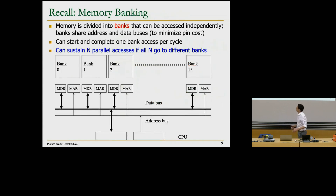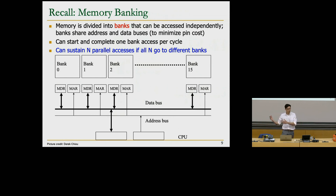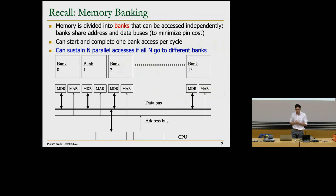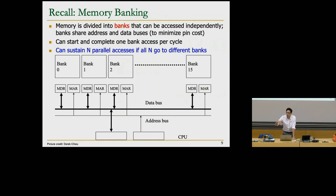We also discussed memory banking. To feed multiple processing elements efficiently, we need efficient memory access — that's why we use multi-banked memory. We can access all banks simultaneously, issuing one request per bank per cycle. One problem is that we cannot perform two accesses to the same bank at once. A solution is having more than one port per bank, meaning more than one memory data register (MDR) and memory address register (MAR) per bank, doubling the bandwidth.